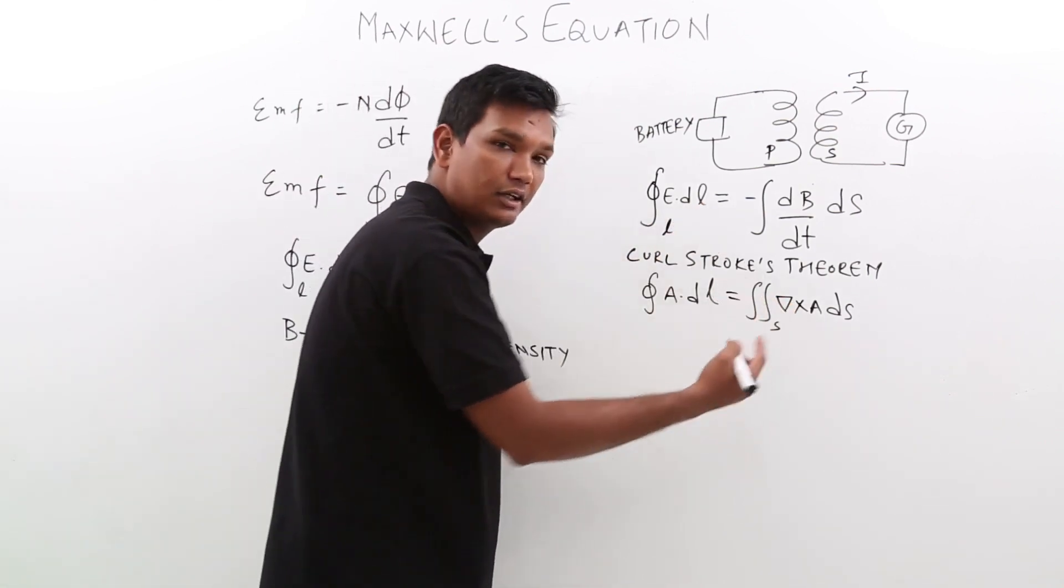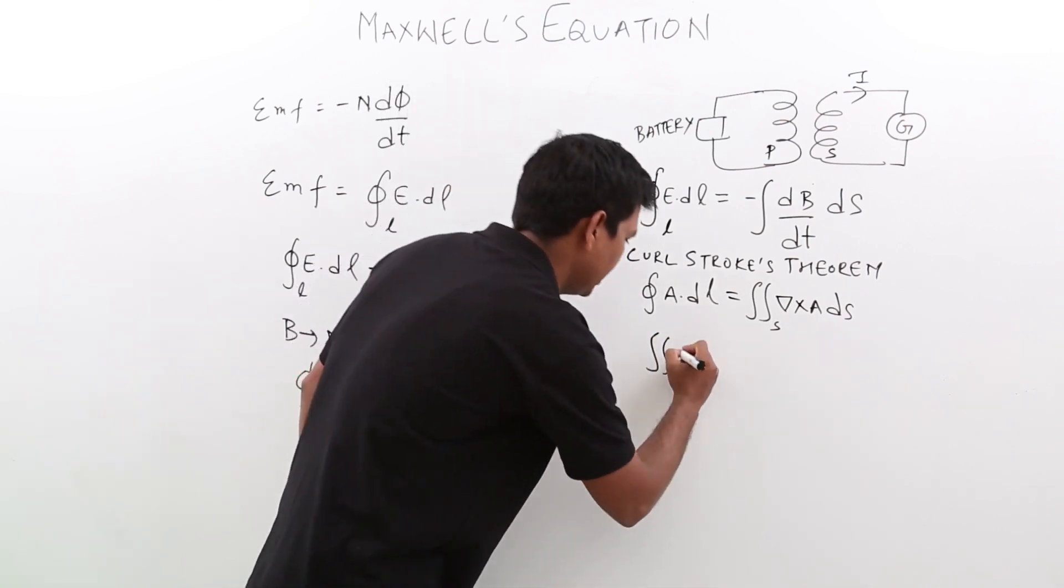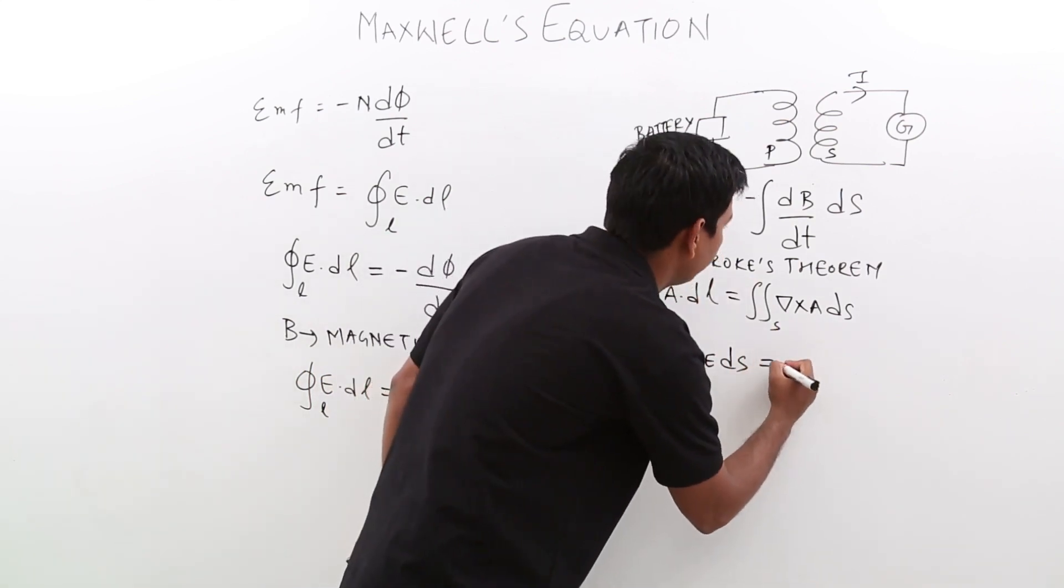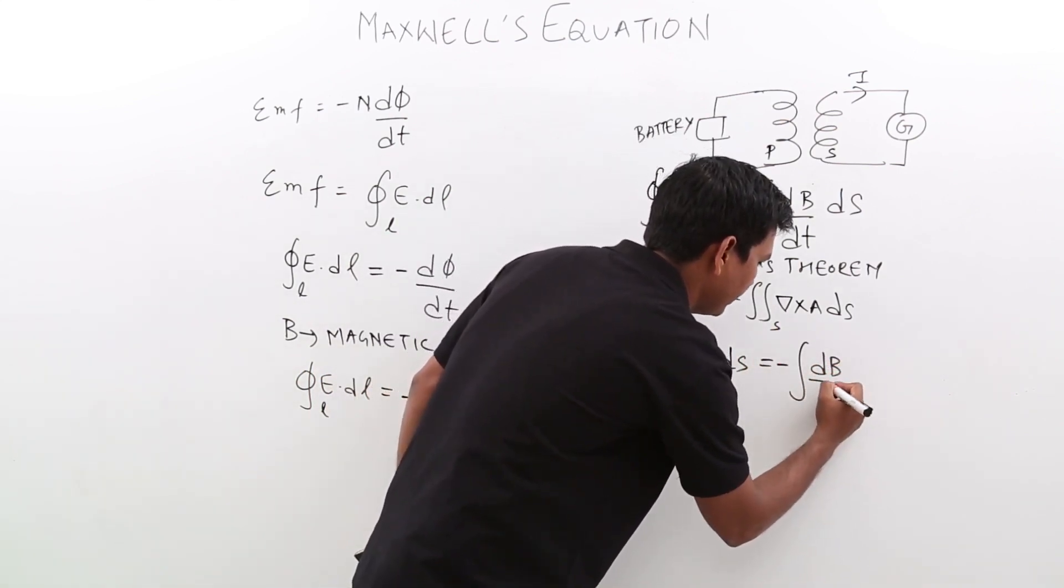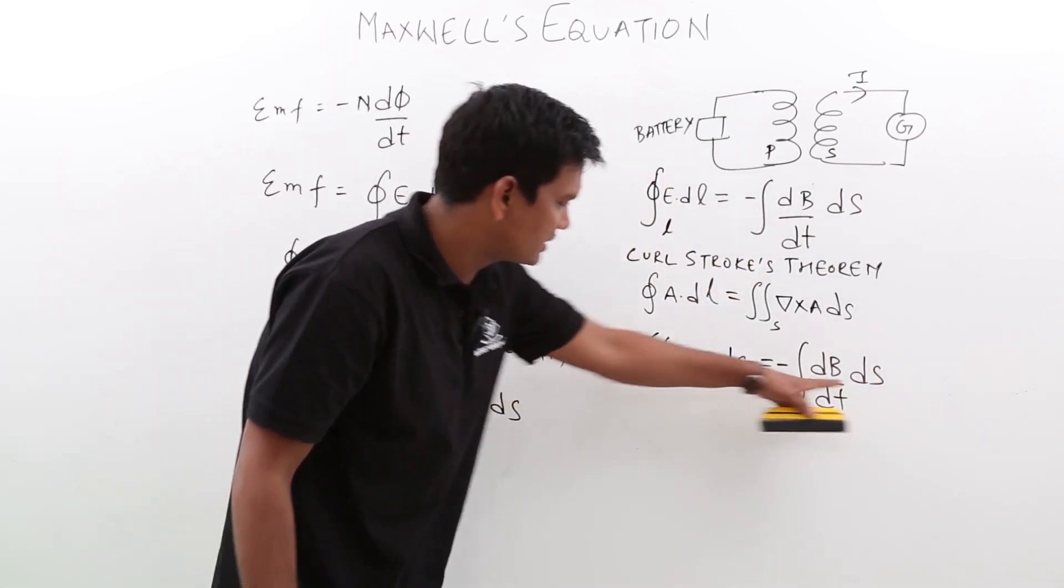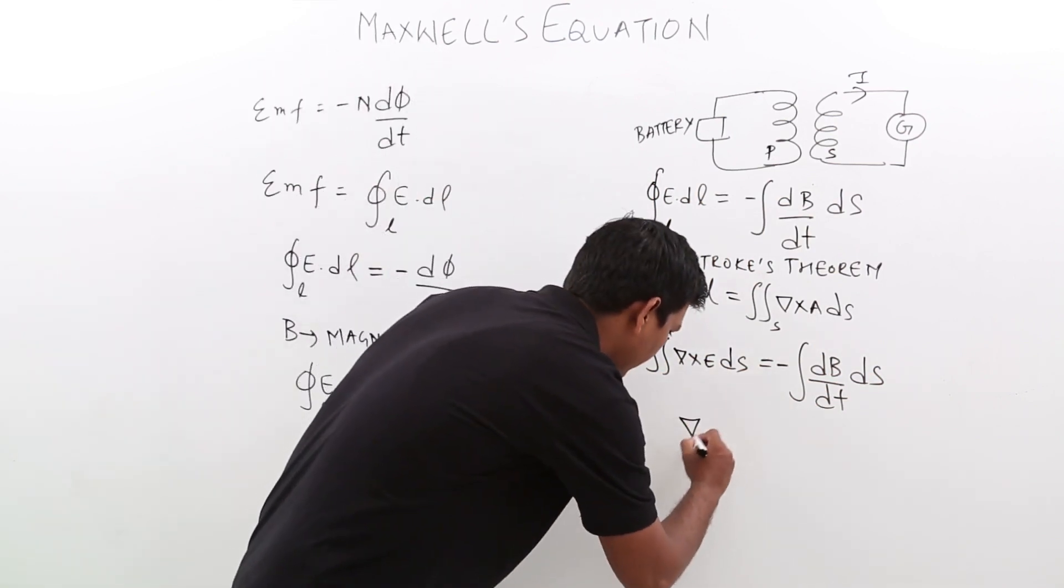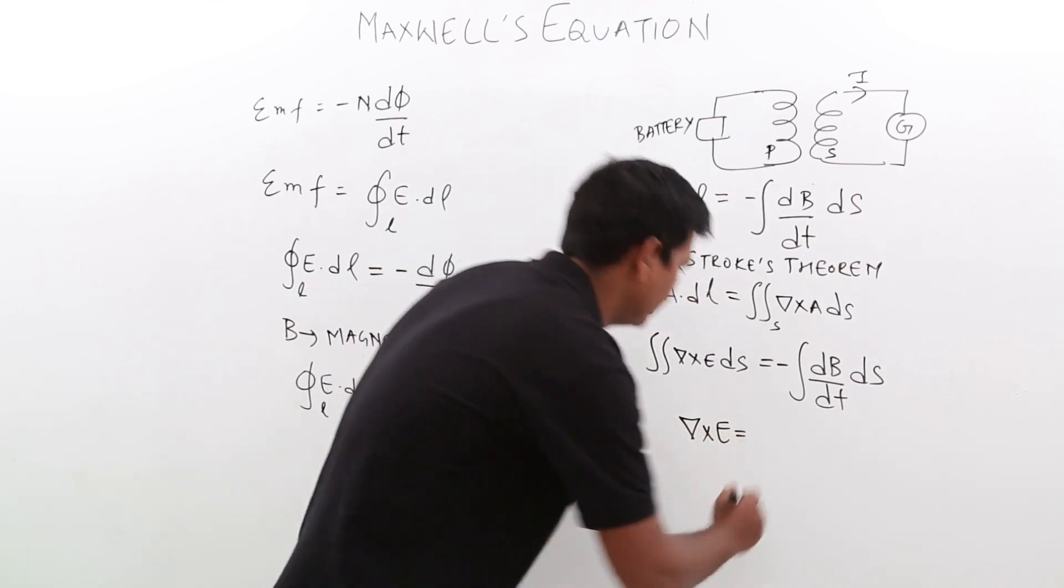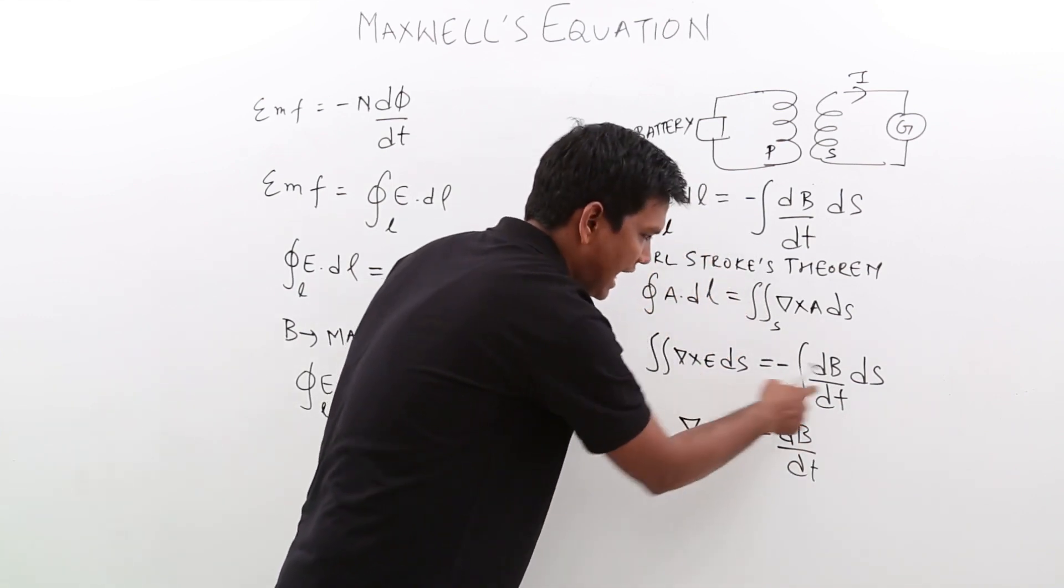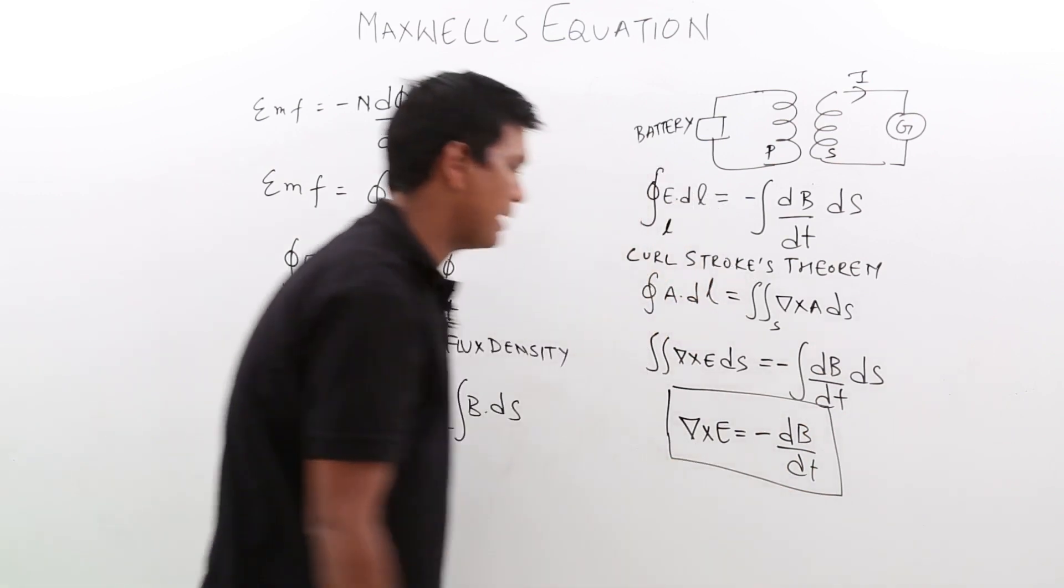E dot dl will become what? Del cross E. It will become del cross E ds and this remains same minus dB/dt ds. Comparing these two equations can I say this is ds, this is ds? If I compare these two equations this would be nothing but del cross E will be equal to minus dB/dt because this quantity has to equal to this quantity. What we have proved is we have proved the Maxwell's third equation.